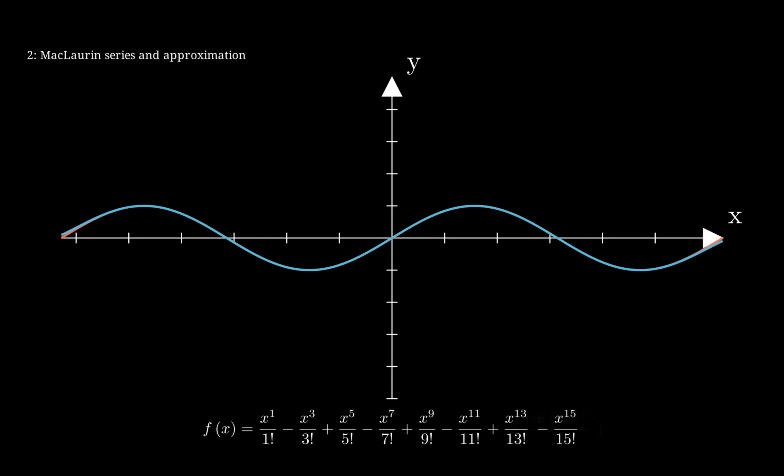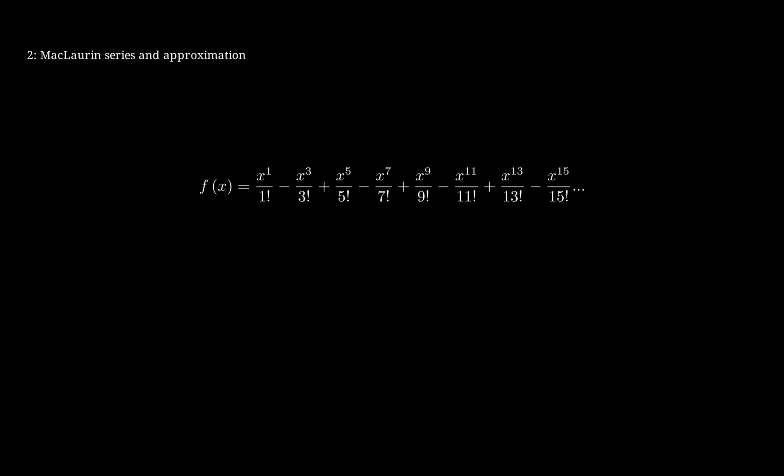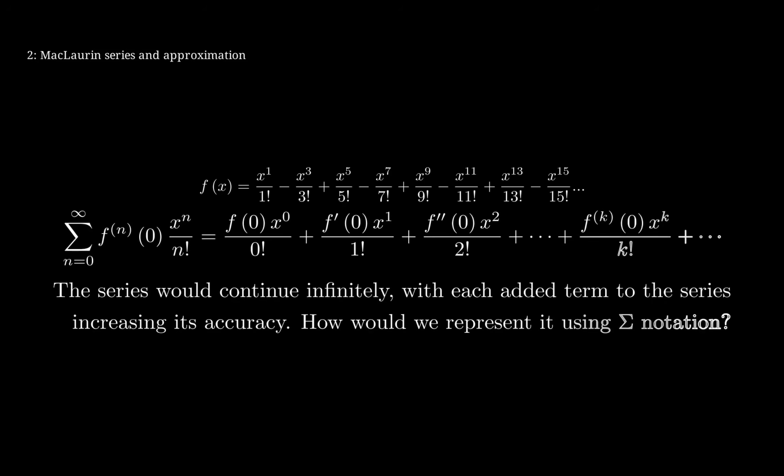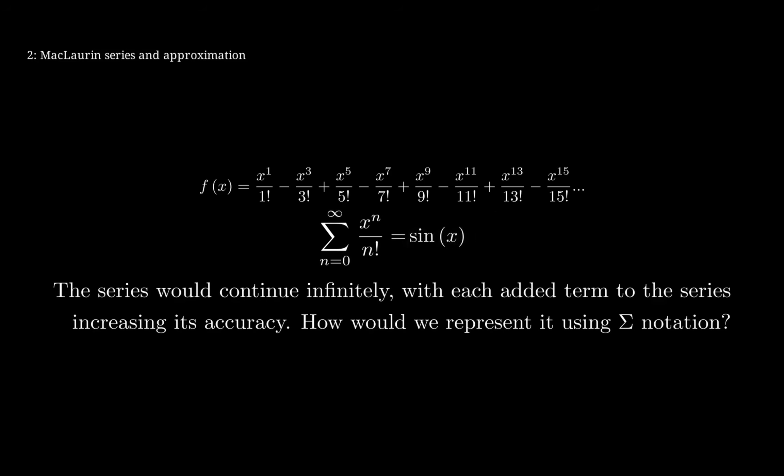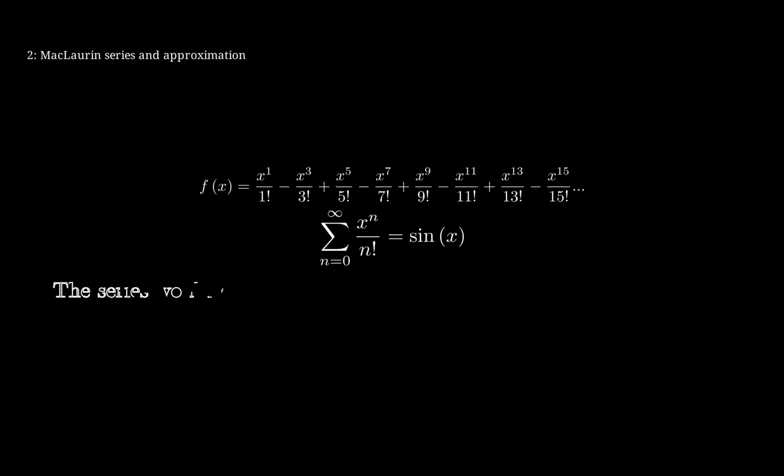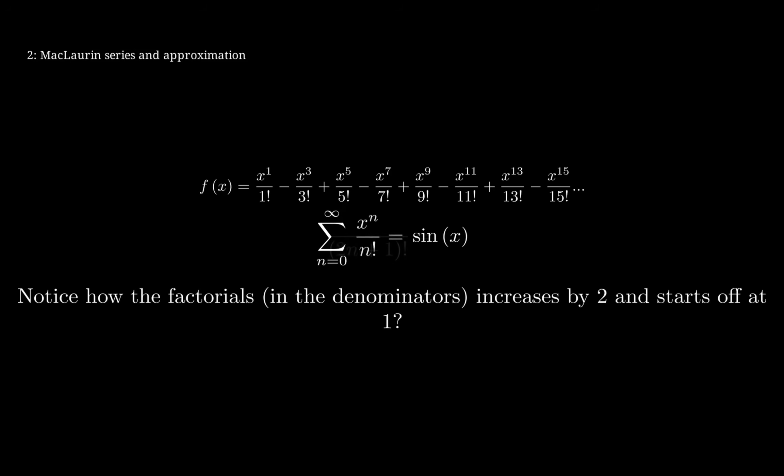So, with the omitting of the zeros, we can now start to see the function emerge. Now, you'll notice that with each term added, x is increasing by 2. And it also starts off at 1, in terms of the factorial, as well as the powers.